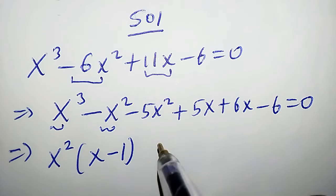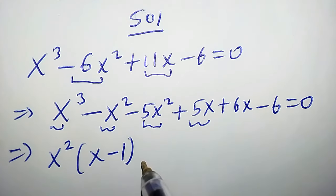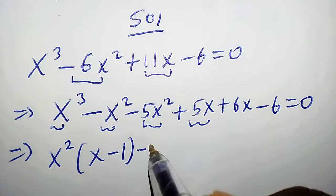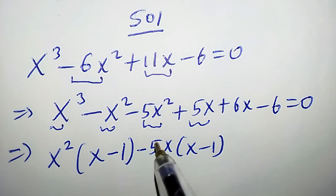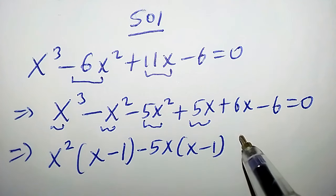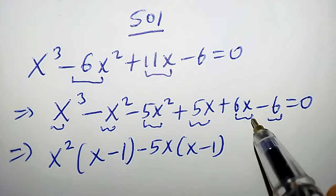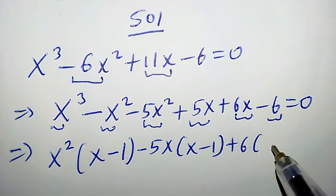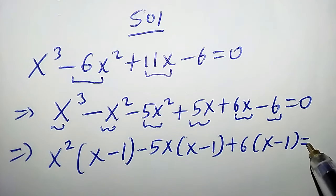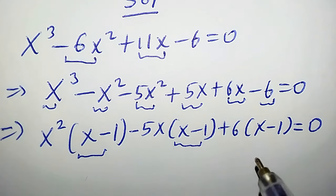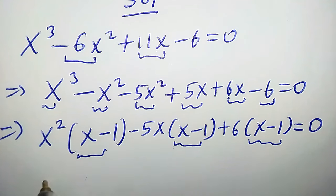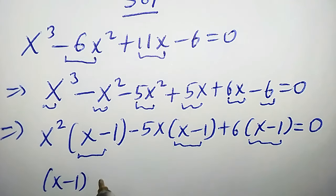The common factor in the next pair is -5x, so we pull out -5x to get -5x(x - 1), because -5x times x is -5x² and -5x times -1 is +5x. The common factor in the last pair is 6, so we get +6(x - 1) = 0. We observe that (x - 1) appears in all three groups.